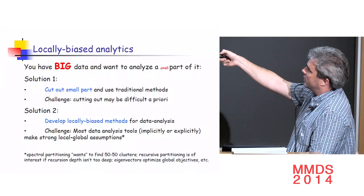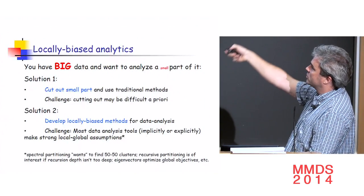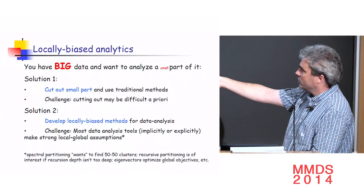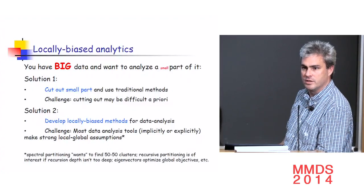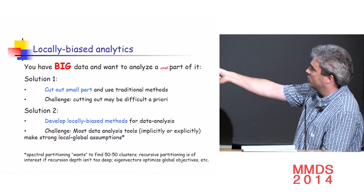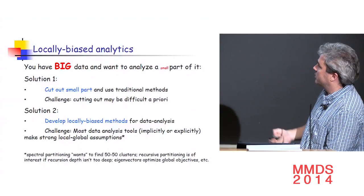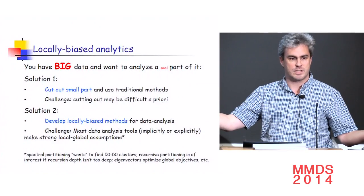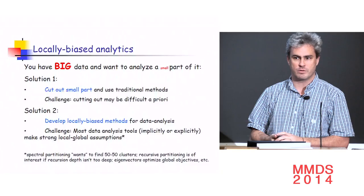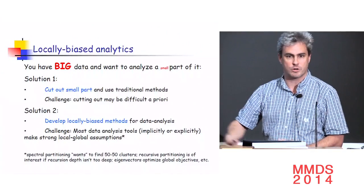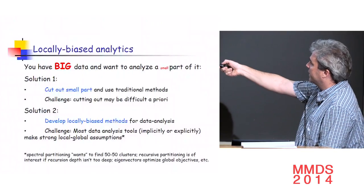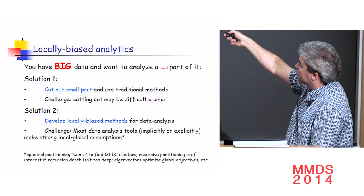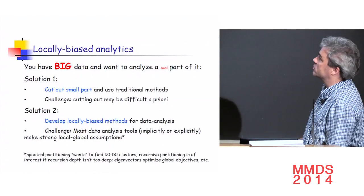The challenge is that most data analysis and machine learning tools, either implicitly or explicitly, make very strong local-global assumptions. Spectral partitioning works on anything you give it, but where it's the right thing to do is when you have nice, well-balanced 50-50 clusters. Recursive partitioning hopes you split the data into two well-balanced pieces so recursion depth isn't too big — if you have a billion-node graph and nibble off ten edges at every level of recursion, that's a very deep recursion. Eigenvectors optimize some global objective. Can we get around that?